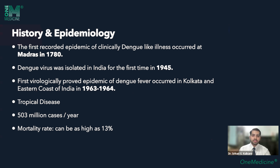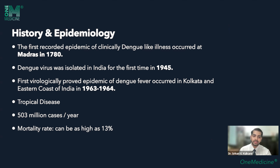Let's look at the history and epidemiology of dengue fever. Dengue fever in India was first recorded — not exactly diagnosed, but a clinical scenario just like dengue — in Madras in 1780. Dengue fever was first isolated in India in 1945. The first virologically proved epidemic, not to be confused with the first clinical dengue-like illness, appeared in Kolkata in 1963 and 1964.